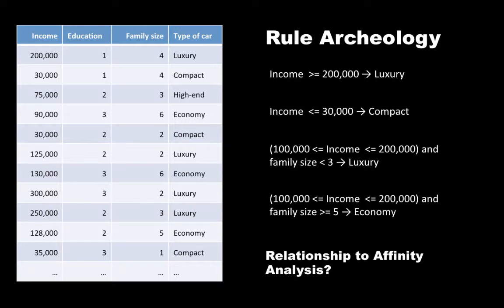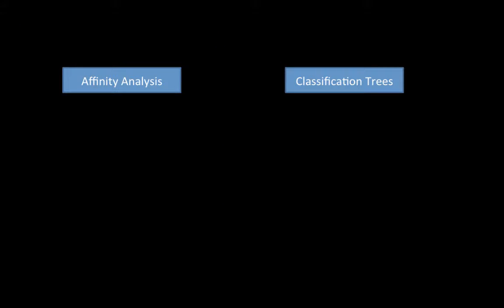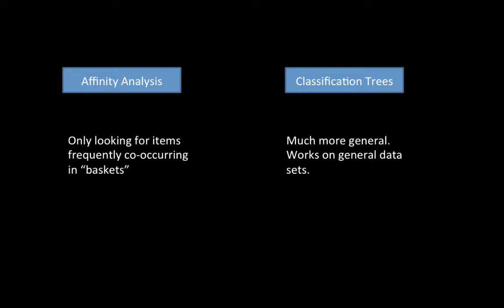In affinity analysis, there was really no target attribute. Those rules simply said: if somebody bought these items, or if some basket contains these items, then the basket will also contain that other item — with some numbers in terms of confidence, support, and lift. Whereas here, we are looking at rules for classification, for predicting the target attribute. In affinity analysis we were looking for items frequently co-occurring in baskets, whereas here it's much more general — it works on general datasets and tries to find rules to predict the target attribute.